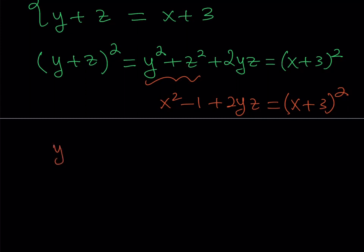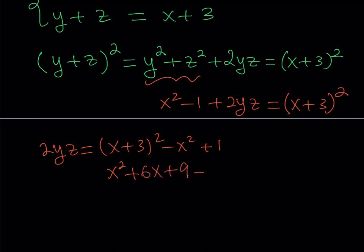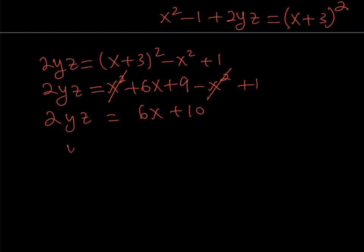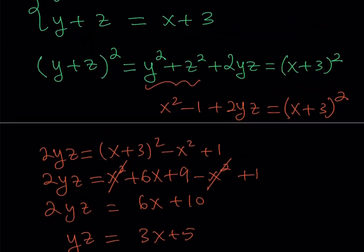Let's subtract x squared and add 1 to both sides. Expanding x plus 3 squared gives x squared plus 6x plus 9, and minus x squared plus 1 equals 2yz. The x squared terms cancel, and we get 2yz equals 6x plus 10. Dividing both sides by 2 gives yz equals 3x plus 5.